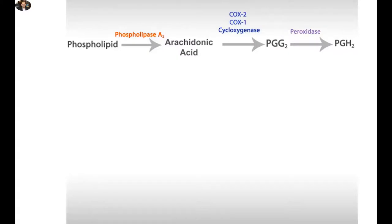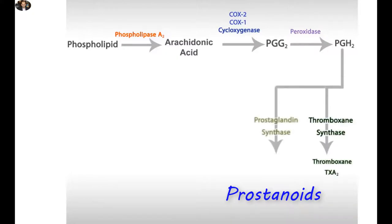PGH2 is a direct precursor of all prostanoids such as thromboxane, prostaglandins, and prostacyclin.